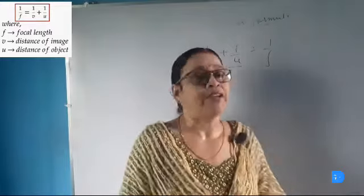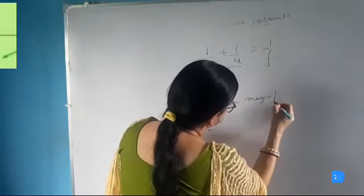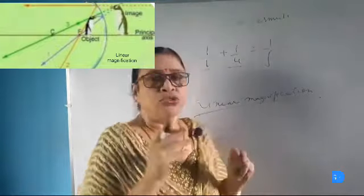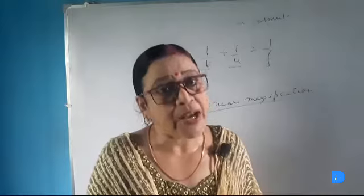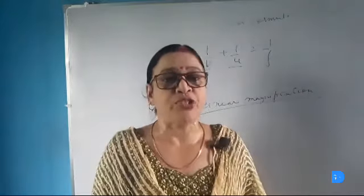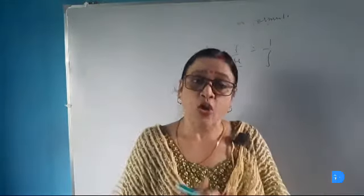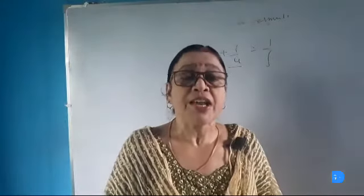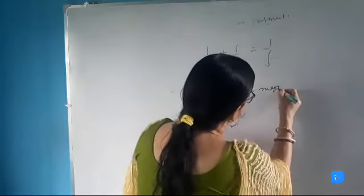Now we will study about linear magnification. In the ray diagram of the spherical mirror, the image may be either bigger, smaller, or of the same size as the object, depending upon the position of the object in front of the mirror. The size of the image relative to the size of the object is given by linear magnification, represented by the letter M.